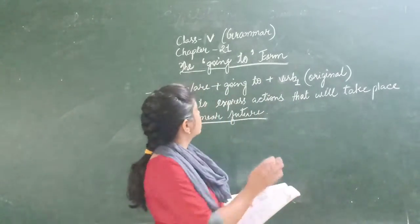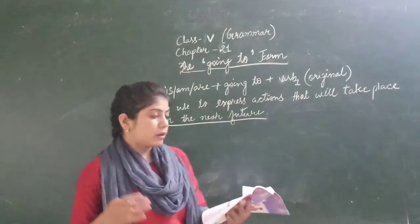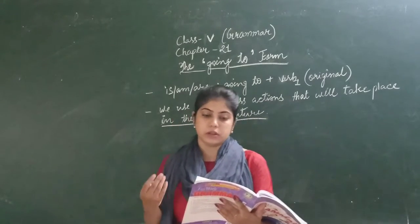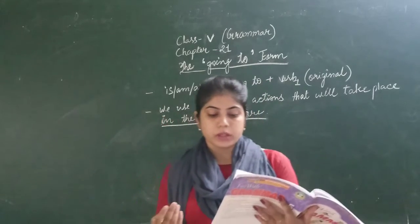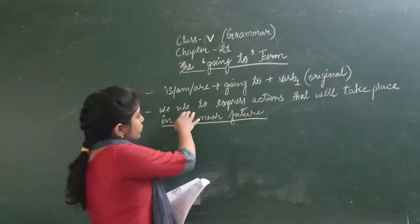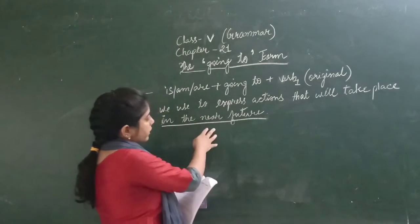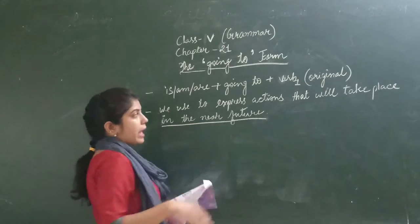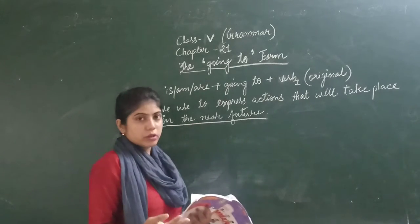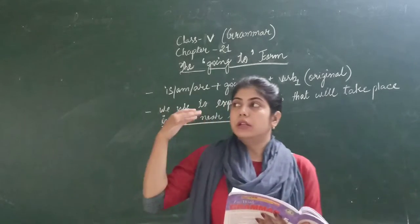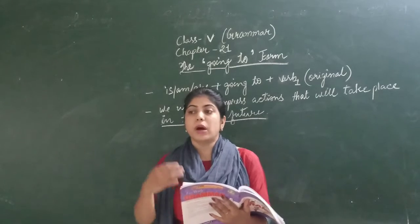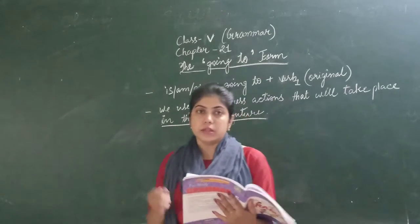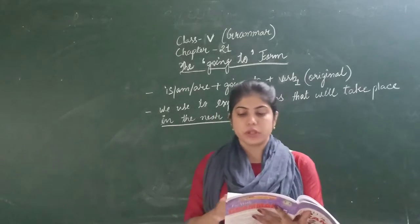So what is the going to form sentence? This is like something that will happen in the near future — events that will take place or happen in the near future. We use it to express actions that are about to happen, very near to our future. For that we will use the going to form verb.